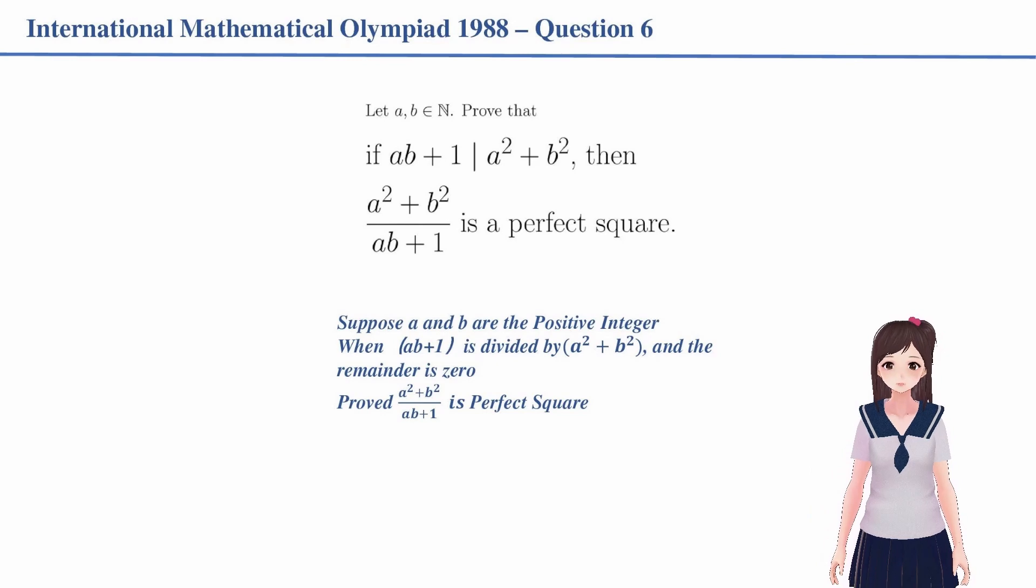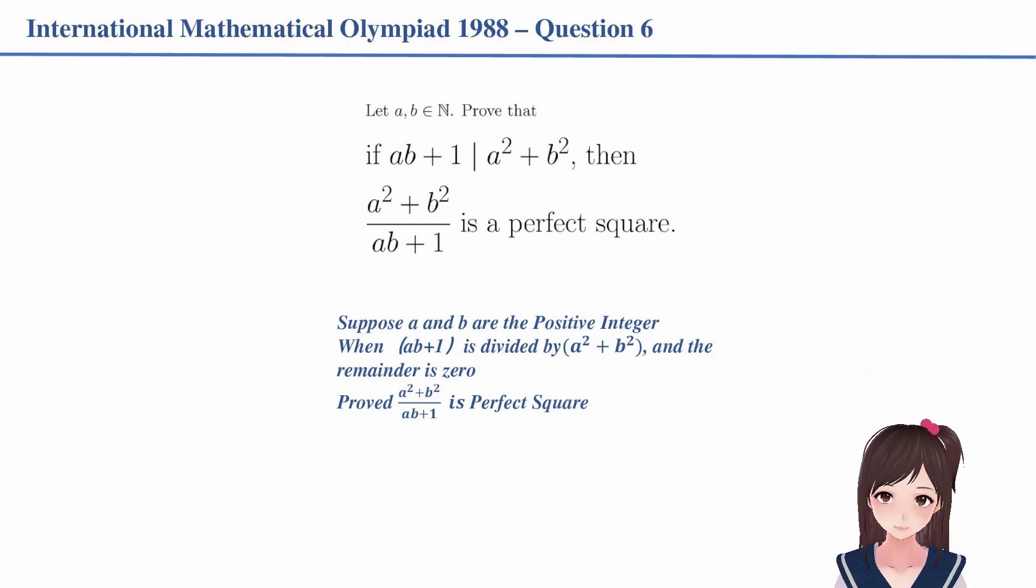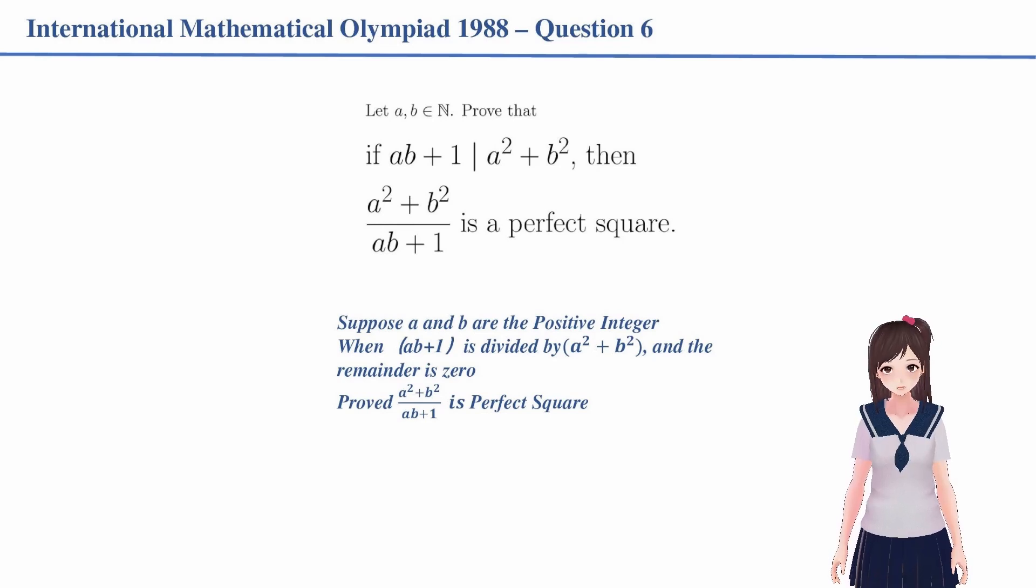This problem should not be so complicated. The question details are: let A and B be positive integers. If AB + 1 is divisible by A² + B², prove the result of (A² + B²)/(AB + 1) is a perfect square.